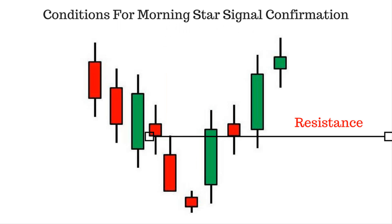Conditions for Morning Star signal confirmation. First condition: it should be formed after a downtrend. Second condition: the first candle should be a large bearish candle, the second candle should be a small bullish or bearish candle, and the third candle must be a large bullish candle. Third condition: after Morning Star formation, traders should wait for the market to break the nearest resistance — once it breaks the resistance, then go for long.